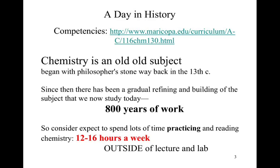We're looking at roughly 800 years of work — that's a lot of stuff to go through. If we stack on top of that, you're expected to cover that 800 years of work in 16 weeks. You will need to practice and read and write about chemistry. You should fully expect 12 to 16 hours per week pretty much solely on chemistry. This does not count time in lecture or lab — this is outside of class.